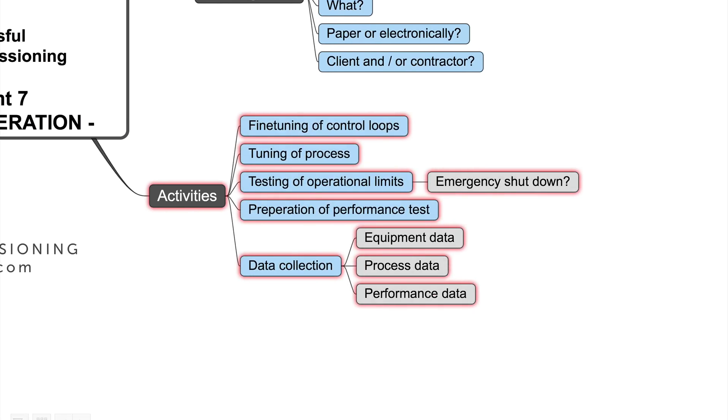Typical activities during initial operation. Most important things is tuning, fine-tuning of control loops, tuning of the complete process. And as well, testing of operational limits. Maybe you will come in such a limit that the emergency shutdown starts. But this is as well a good opportunity to check and observe that the emergency shutdown is working well.